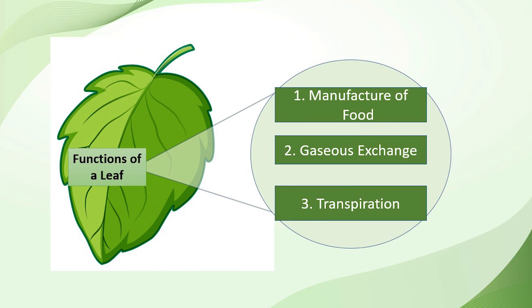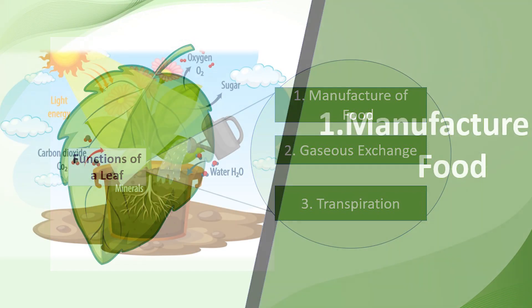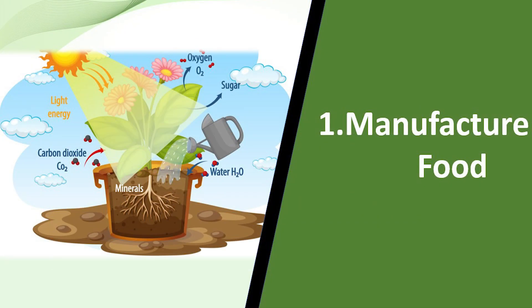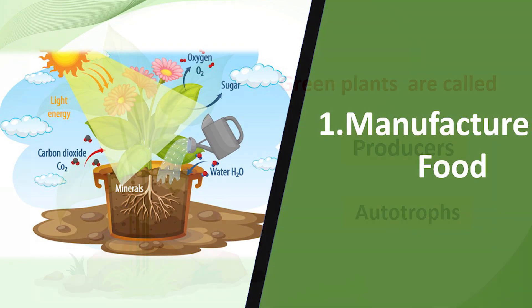Basically, leaves perform three functions: manufacturing food, gaseous exchange, and transpiration. Let us study the first one, that is manufacturing of food.